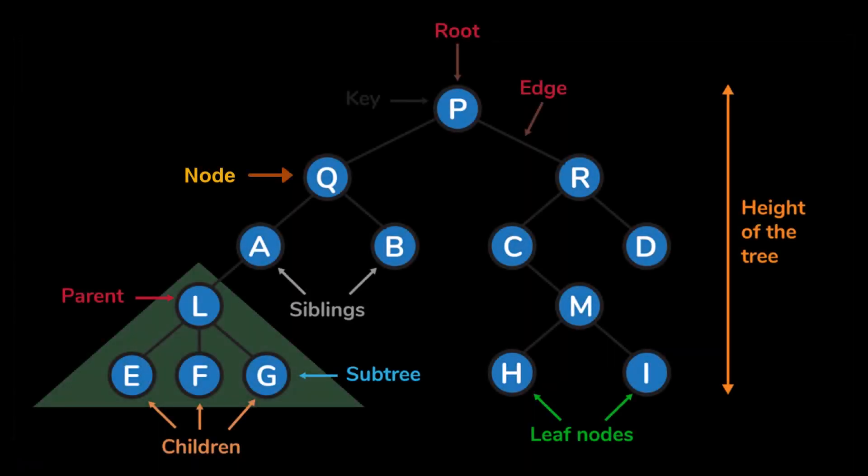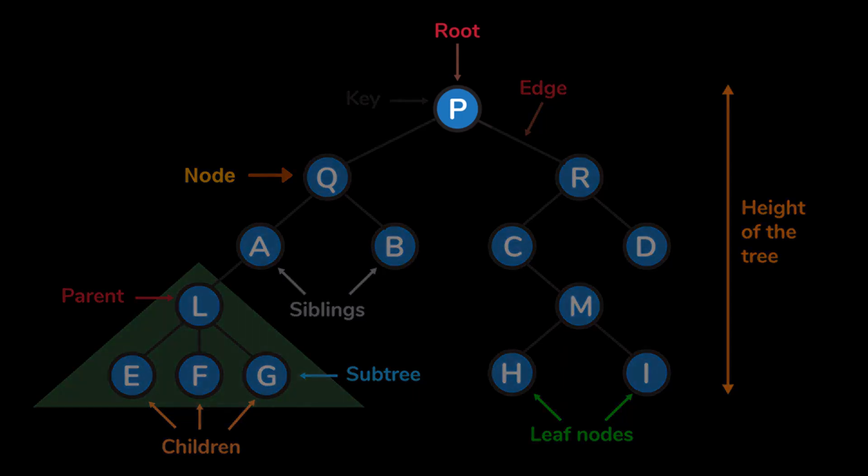Before we get to common types of trees in data structure and algorithm, let's talk about some key concepts and most known terminology related to trees. Let's start by talking about root. The topmost node of a tree is called root. It is the starting point of traversing the tree.